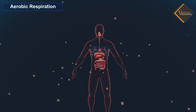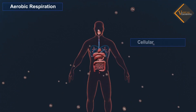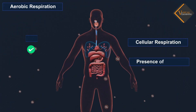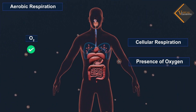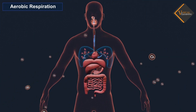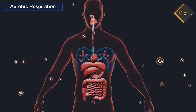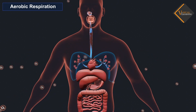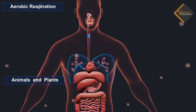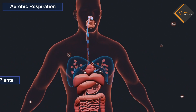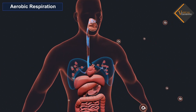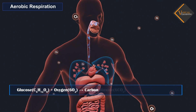Aerobic respiration is a type of cellular respiration that takes place in the presence of oxygen to produce energy. It is a continuous process that takes place within the cells of animals and plants. This process can be explained with the help of a chemical equation.